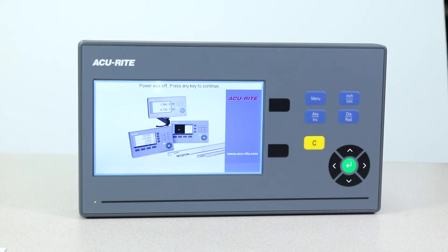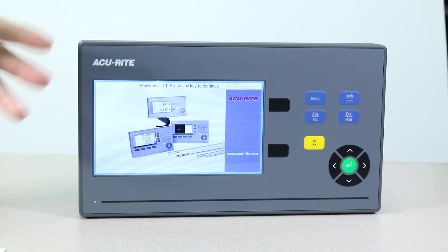Hello and welcome to this product demonstration for Measurement Technologies and Supply. Today we're taking a look at the DRO 102 digital readout display by Accurite.